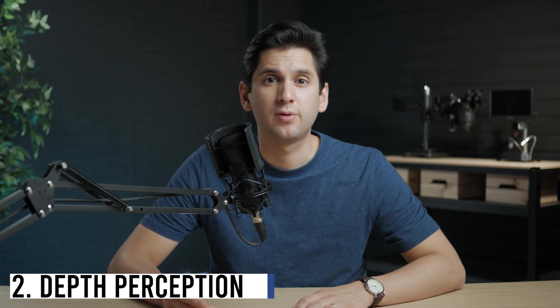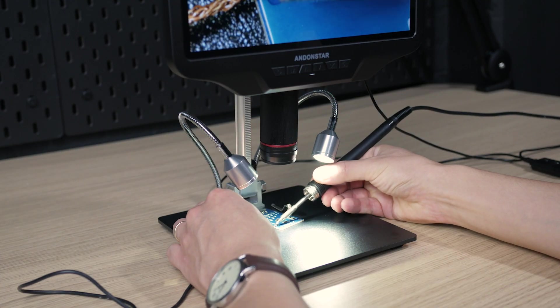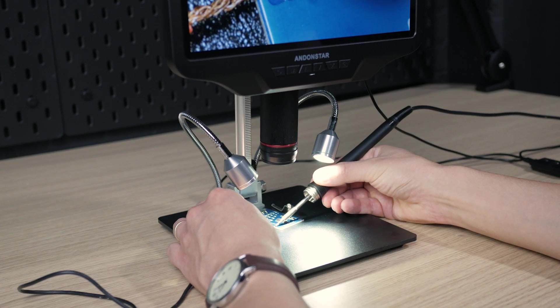Being able to see depth helps with placing small SMD components on a PCB as well as soldering. Moving things around while looking at a two-dimensional image can be difficult and slow.